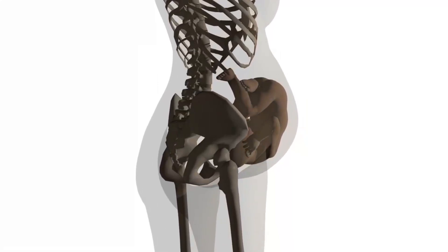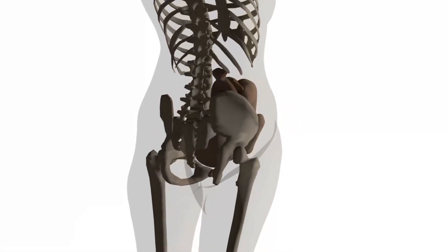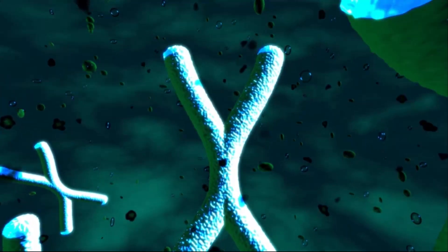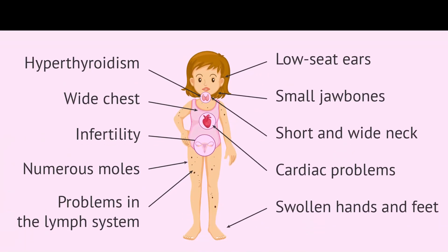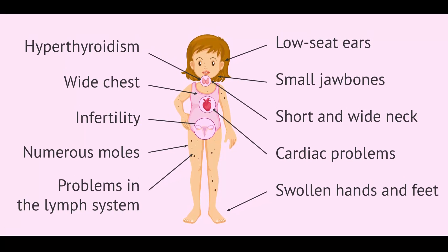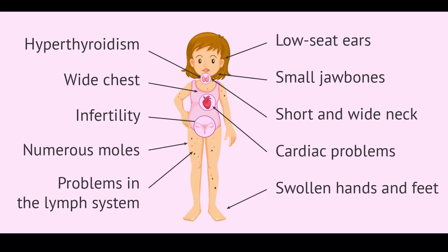Turner syndrome is a condition in which a female is missing an X chromosome. Instead of being XX, they're X0. Signs and symptoms vary, but common traits include a webbed neck, low-set ears, a low hairline, short stature, an absence of menstruation, underdeveloped breasts, and infertility. Turner syndrome occurs in between 1 in 2,000 and 1 in 5,000 females at birth. Generally, people with Turner syndrome have a shorter life expectancy and are more likely to develop heart problems and diabetes.